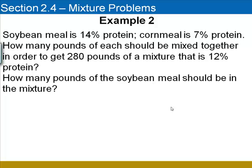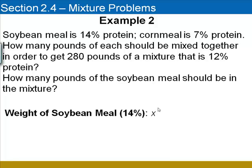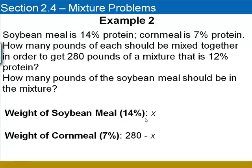Well, as in the last problem, we'll begin by listing variable expressions for the weight of each type of meal. We'll let X represent the weight of the soybean meal, which is 14% protein. And we'll let 280 minus X represent the weight of the corn meal. Again, if we let X represent the amount, volume, etc. of the first type in our mixture problem, then we subtract the total minus X to find out how much we have of the second type.